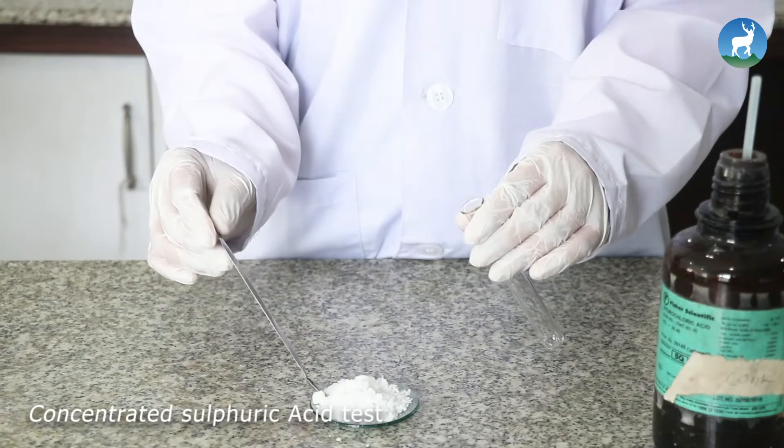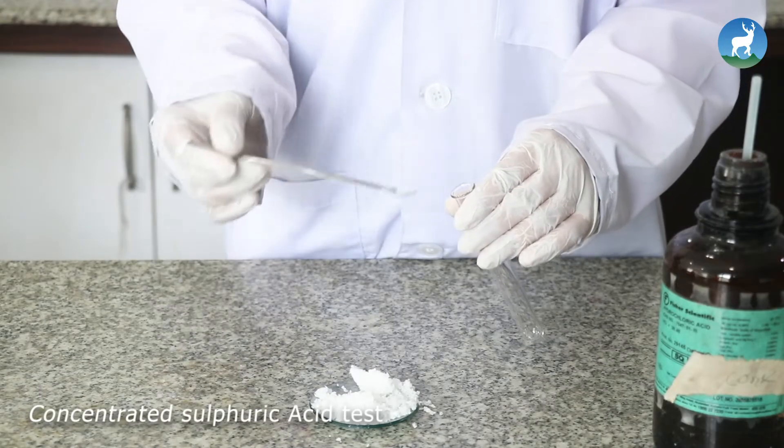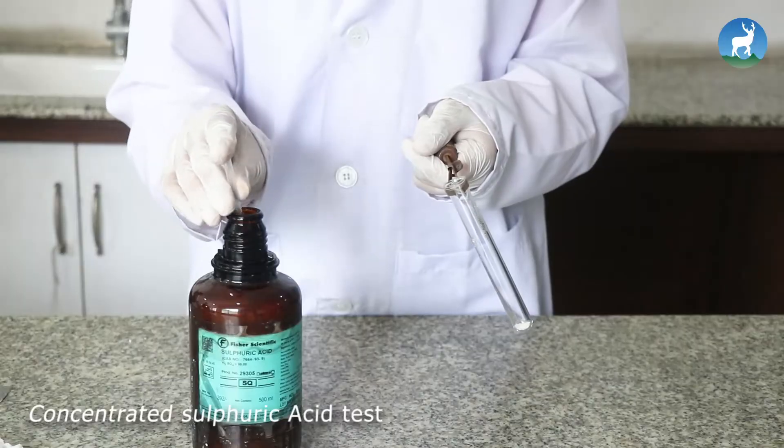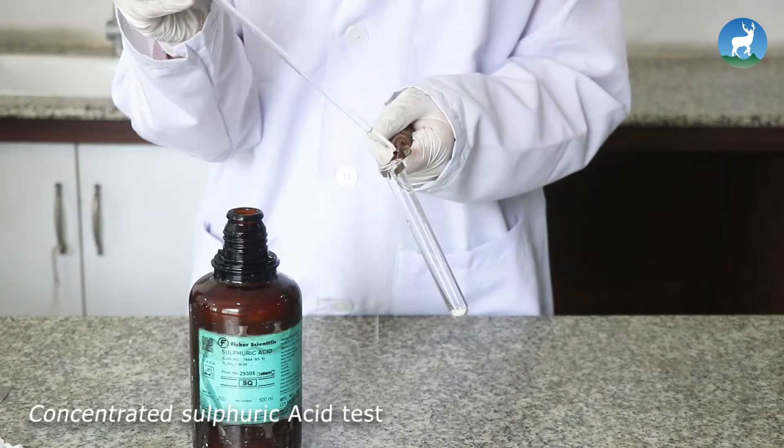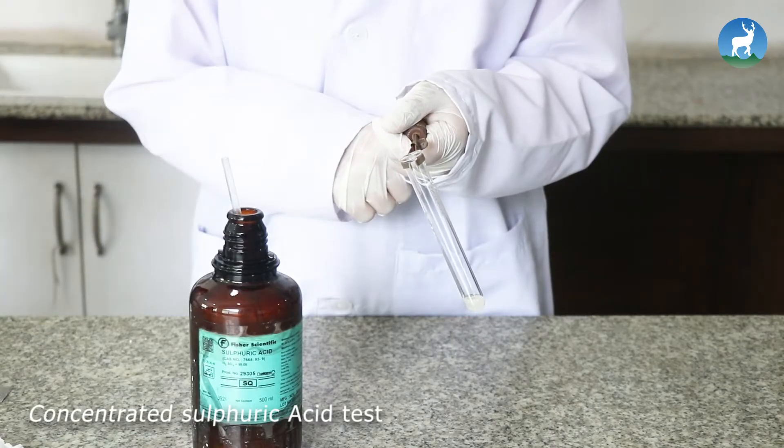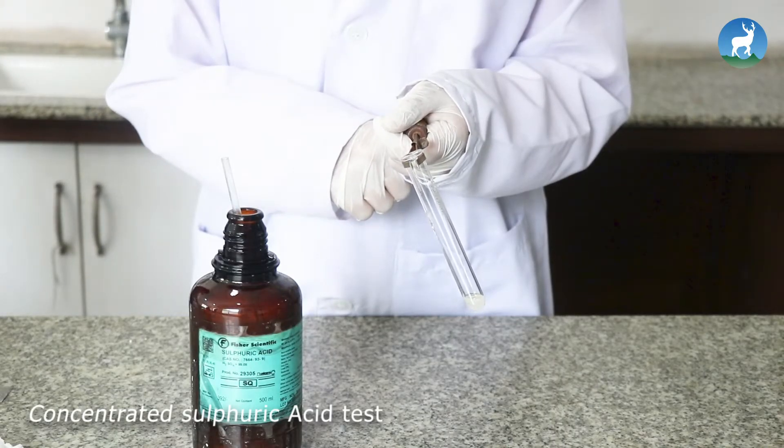Concentrated sulfuric acid test: Take a pinch of given salt in a clean and dry test tube. Add few drops of concentrated sulfuric acid. No gas was evolved. It indicates the absence of halides like chloride, bromide, and iodide.